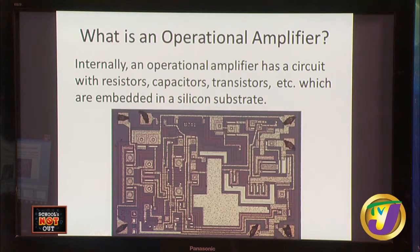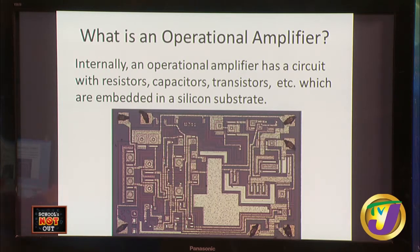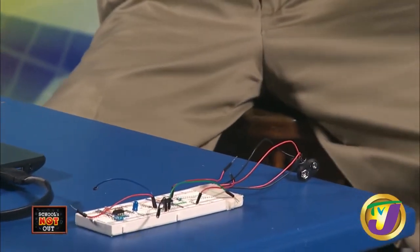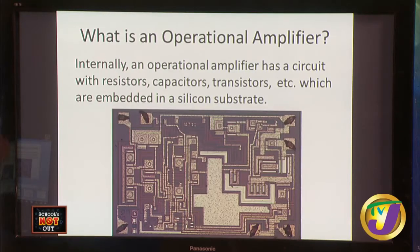Internally, the operational amplifier has a circuit consisting of a myriad of various electronic components — resistors, capacitors, transistors, and so on — which are embedded in a silicon substrate. Within the operational amplifier, all of these components are embedded in that silicon substrate, so they look different than they would as discrete physical devices.